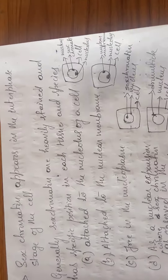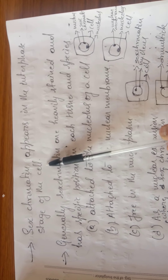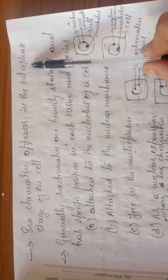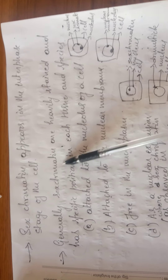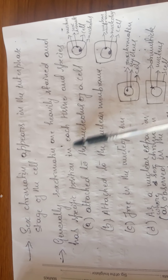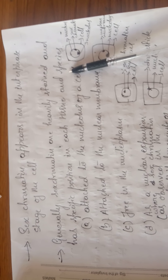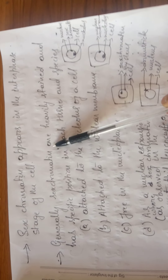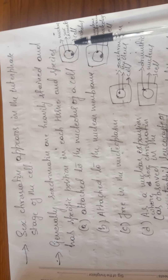When do Barr bodies appear? Barr bodies generally appear in the interphase stage of a cell. Interphase is the resting stage, and it is only during this stage that you are able to see sex chromatin appear. Generally, sex chromatin is heavily stained and has a specific position in each tissue. As per the literature, it has been observed that the position of sex chromatin varies across tissues and species.